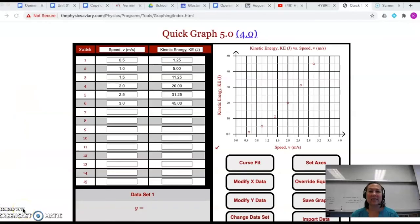Let's do another example. To recap, when we go to quick graph 5, we go to physics aviary, go to quick graph, then we're going to put in our headers. In this case I put in speed, its symbol v, and its unit. I put in kinetic energy, ke, that's its symbol, and joules, that's its unit.